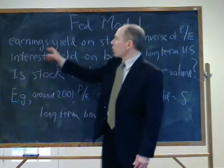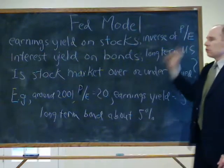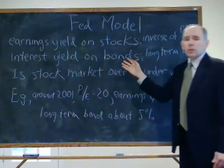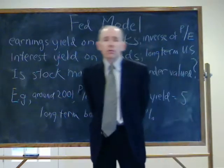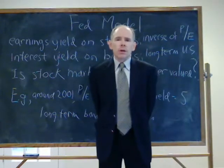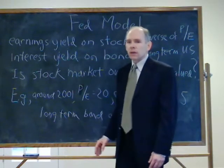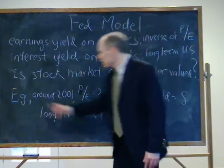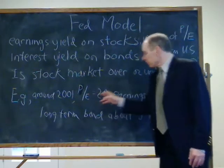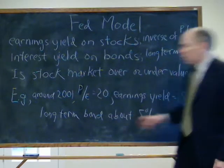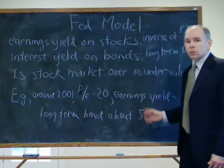Let's talk about the Fed model. The Fed model uses the earnings yield on stocks — that's the inverse of the P/E ratio of the stock market in general — and the interest yield on some long-term government bond, usually a 10-year or 30-year U.S. government bond. The basic question is: is the stock market overvalued? We think about the stock market and the bond market as substitutes. Around 2001, the P/E ratio in the stock market was about 20, so the inverse gives you about 5. Long-term bonds were also yielding about 5 at the same time, so those markets were not over- or undervalued relative to each other.